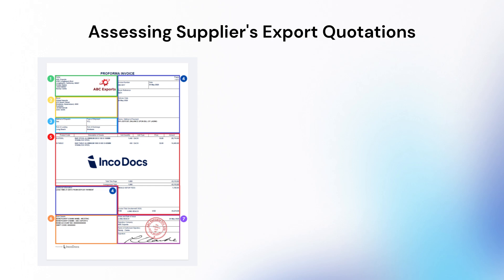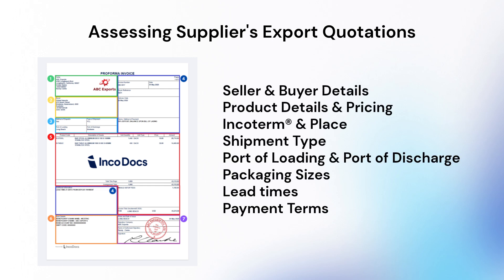The supplier's quotation or proforma invoice document should include seller and buyer's details, all product details including product descriptions, quantities, unit types, pricing and currency, the incoterm and place, shipment type — for example by FCL full container or by LCL shipping — port of loading and port of discharge, packaging sizes so that you can work out each unit's volume and weight, lead times required to manufacture the products, and payment terms including method of payment and bank details.